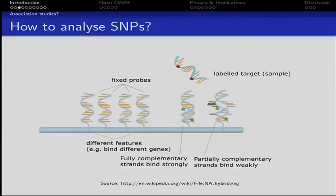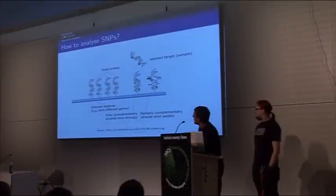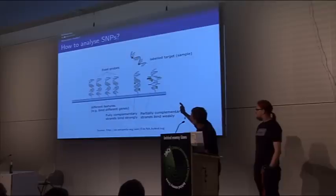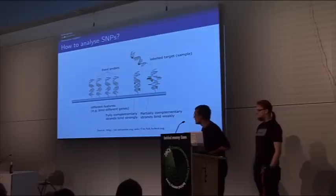In the lab, if you want to analyze SNPs, you have to use microarrays, which — if you recall high school — are based on the principle that DNA strands bind to their antagonists. So what we have here are fixed probes, and in the middle we have a fully complementary strand binding, and because these probes are labeled with fluorescence, you can see the light in the lab.